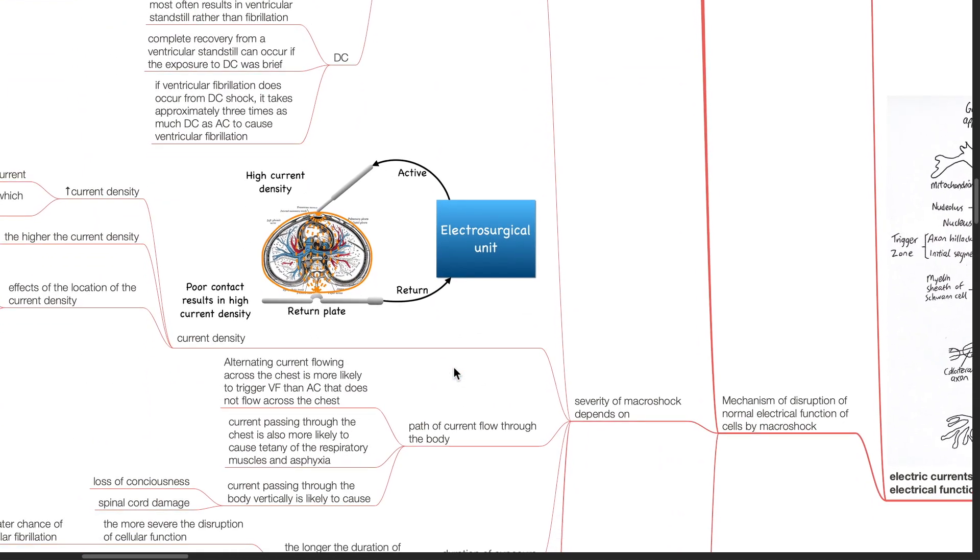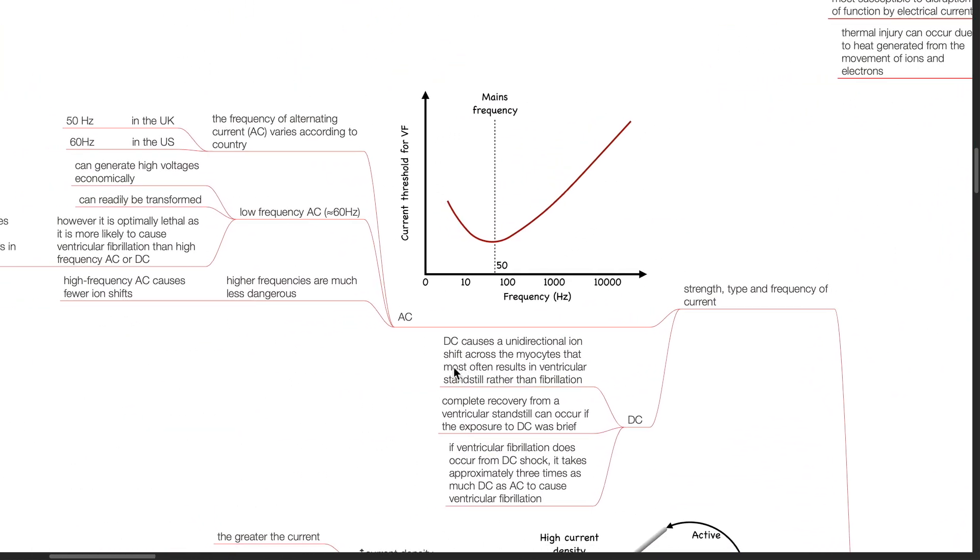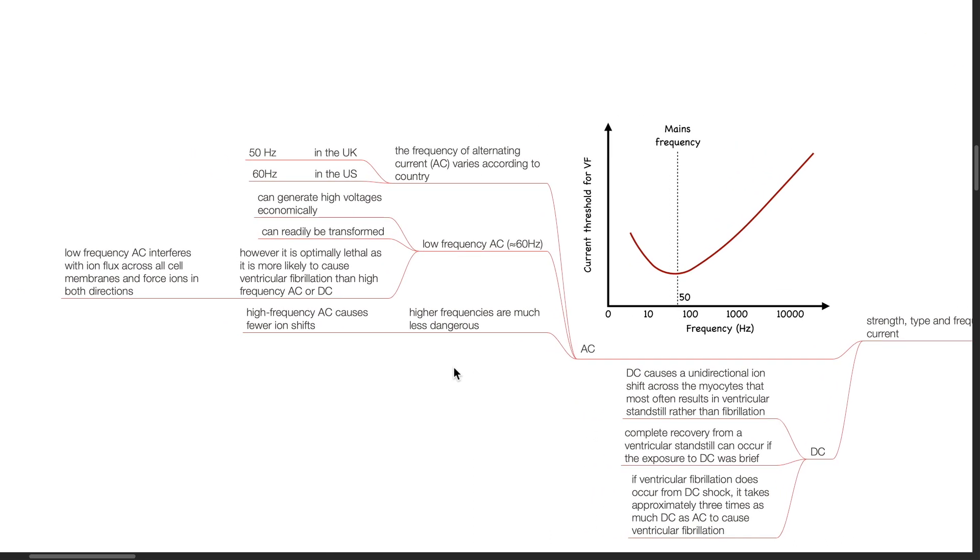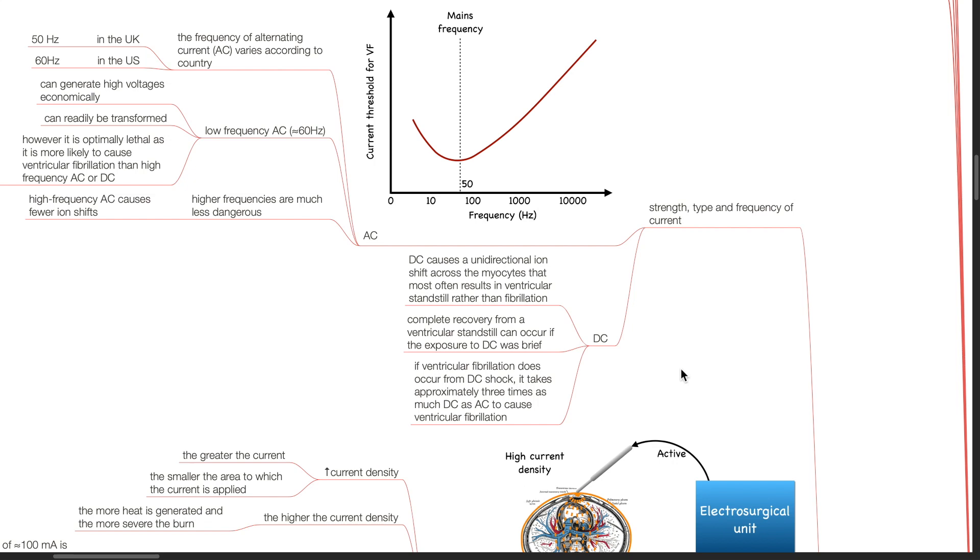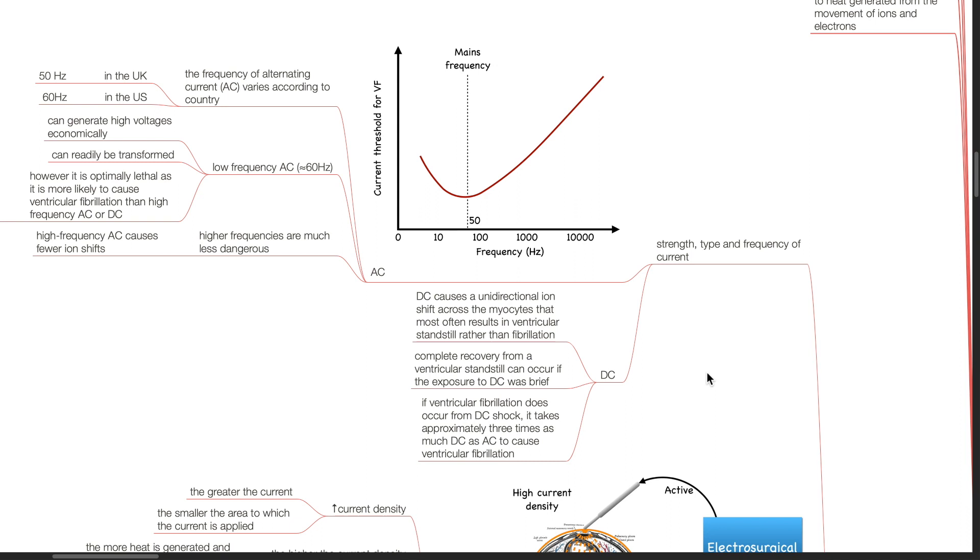The severity of macroshock depends on the strength, type and frequency of the current. For AC, the frequency varies according to the country, 50 Hz in UK and 60 Hz in US. Low-frequency AC, about 60 Hz, can generate high voltages economically and can be readily transformed. However, it is optimally lethal as it is more likely to cause ventricular fibrillation than high-frequency AC or DC. Low-frequency AC interferes with ion flux across cell membranes and forces ions in both directions. High-frequency AC are much less dangerous and cause fewer ion shifts.